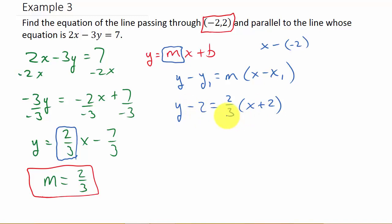And then we solve this thing for y. Alright, so I'm going to distribute the 2/3. So I get y - 2 = 2/3x + 4/3. Remember, 2/3 times 2. Well that's the same thing as 2/1. Multiply the numerators, multiply the denominators. It's 4/3.